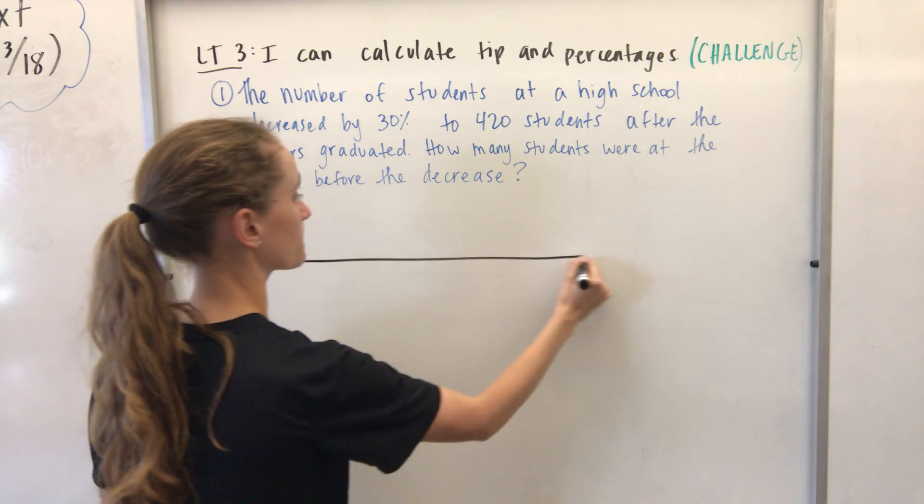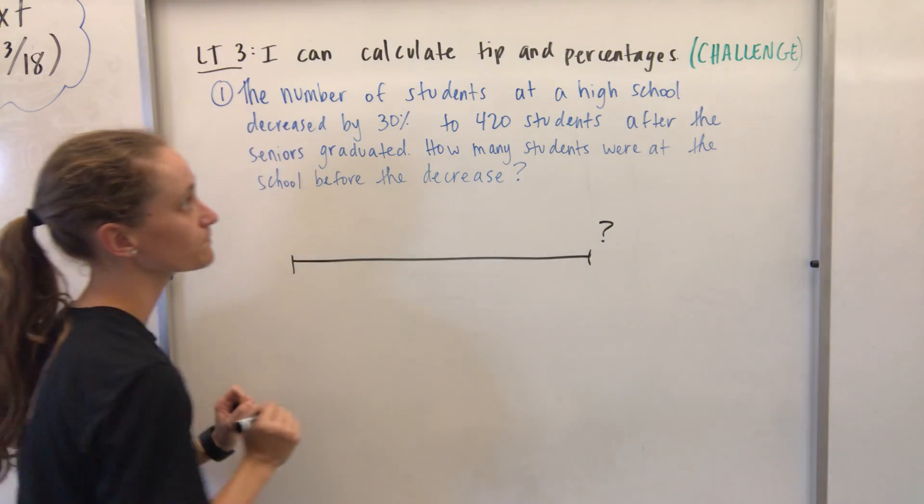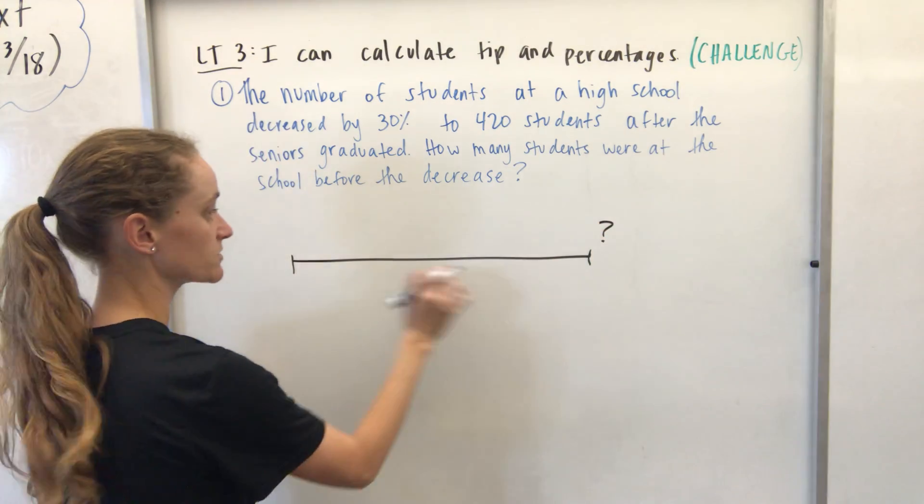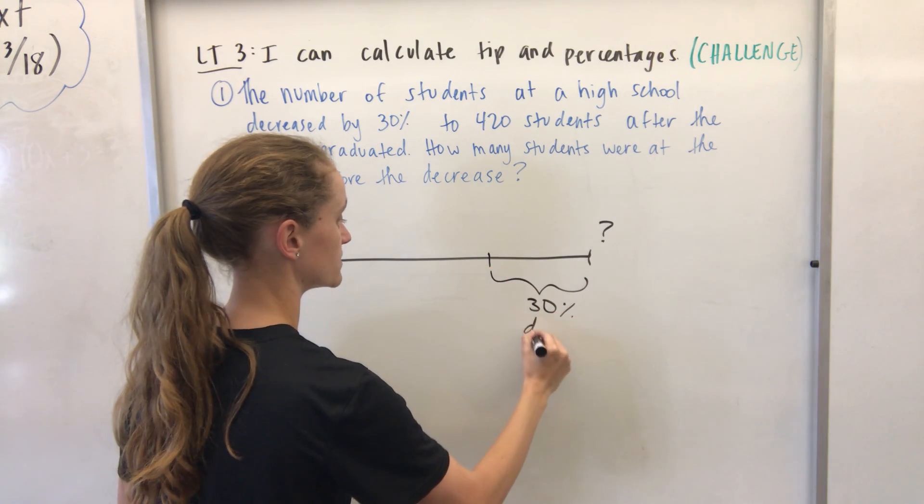So if I'm going to use a line diagram, there was some amount of students that we don't know what it was right now. And the number decreased by 30, so that's about a third. Okay, so there was a 30% decrease.